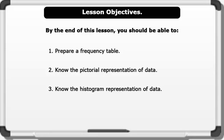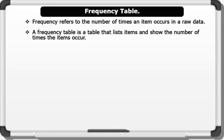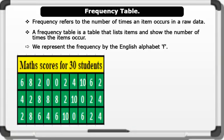Frequency table. Frequency refers to the number of times an item occurs in a raw data. A frequency table is a table that lists items and shows the number of times the items occur. We represent the frequency by the English alphabet f.